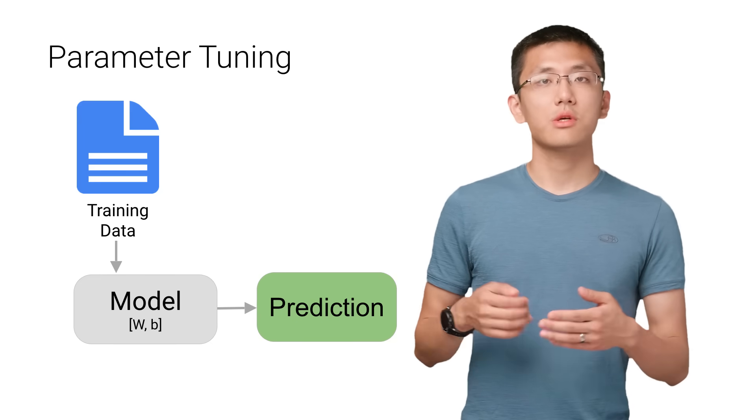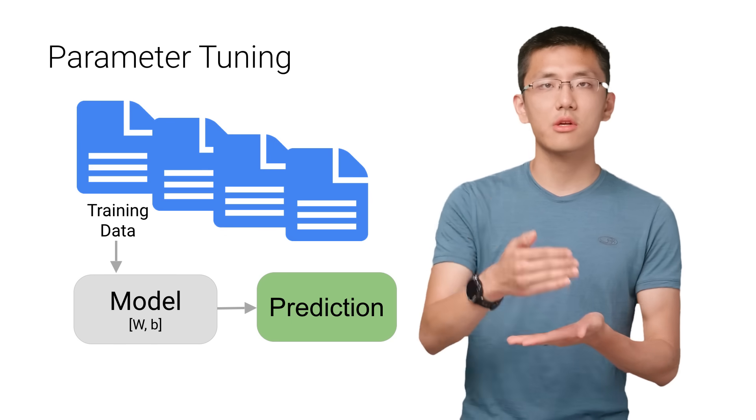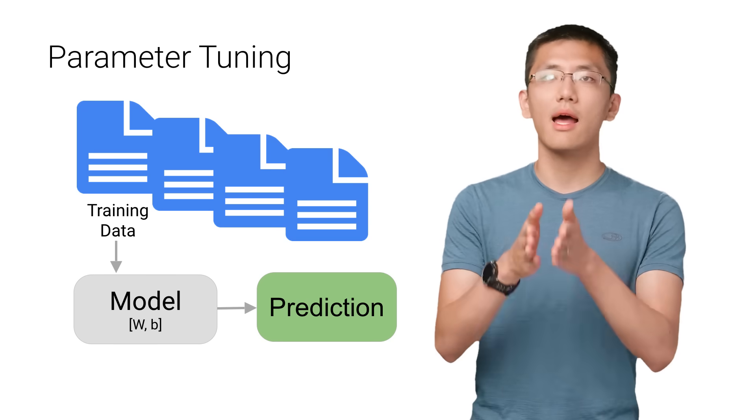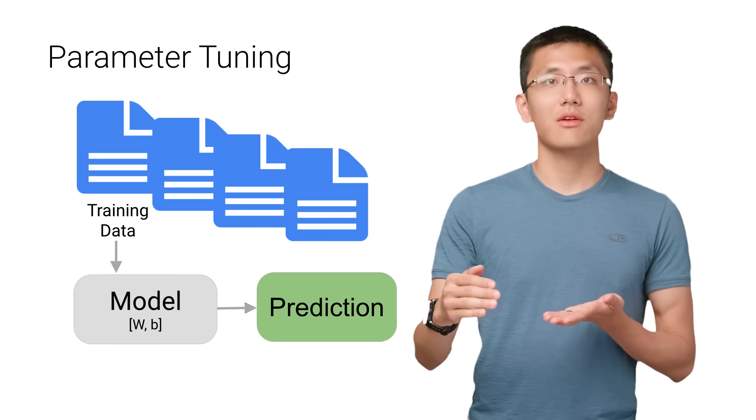One example of a parameter we can tune is how many times we run through the training set during training. We can actually show the data multiple times. So by doing that, we will potentially lead to higher accuracies.